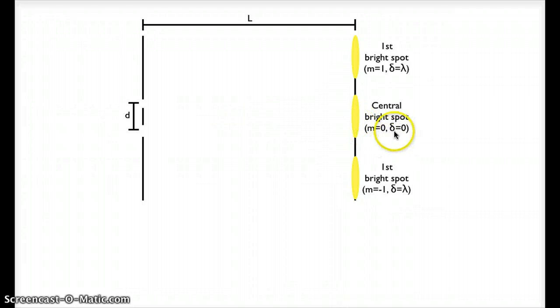So here in the middle light from each slit travels the same distance. The path length difference delta is 0. Up at the first bright spot light from this bottom slit will travel one wavelength further than light from the top slit. Down here light from the top slit will travel one wavelength further than light from the bottom slit.